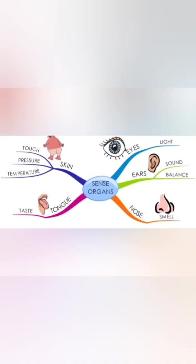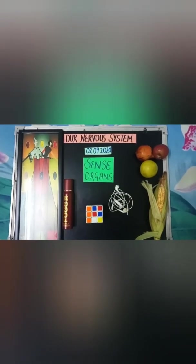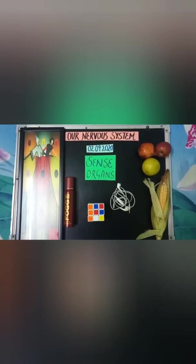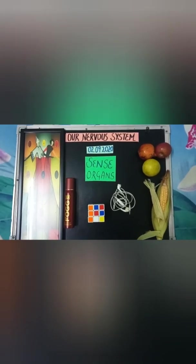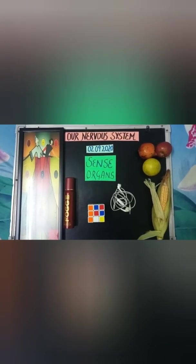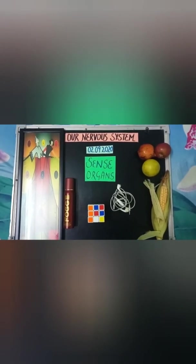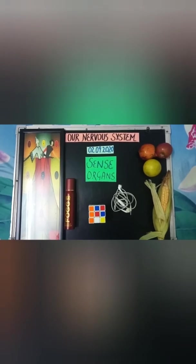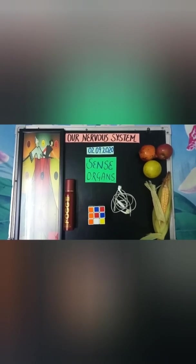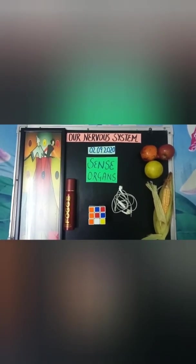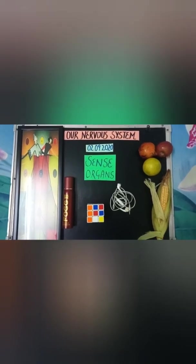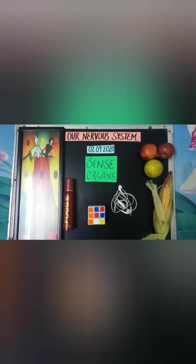A network of nerves and sense organs is always associated with interpreting data in response to special physical phenomena. This is the way that decides our interaction and response to the environment. Now I'll show you something really very interesting for concept clarity, so you'll be able to identify what sense organs are all about and how they are helpful in our daily life.